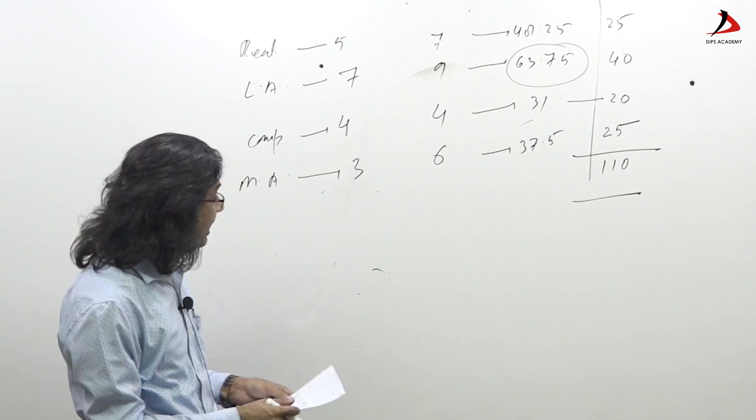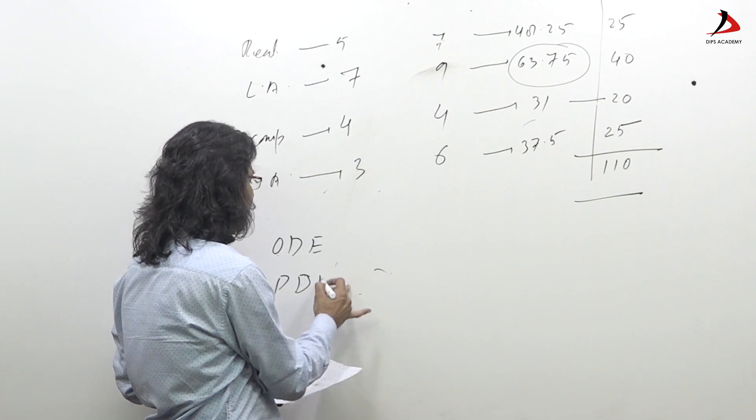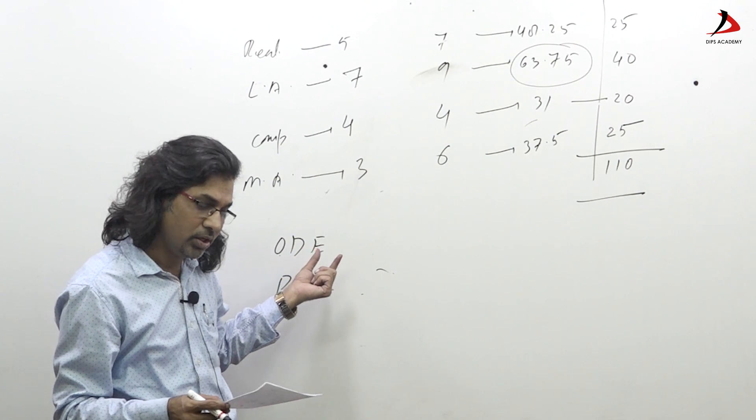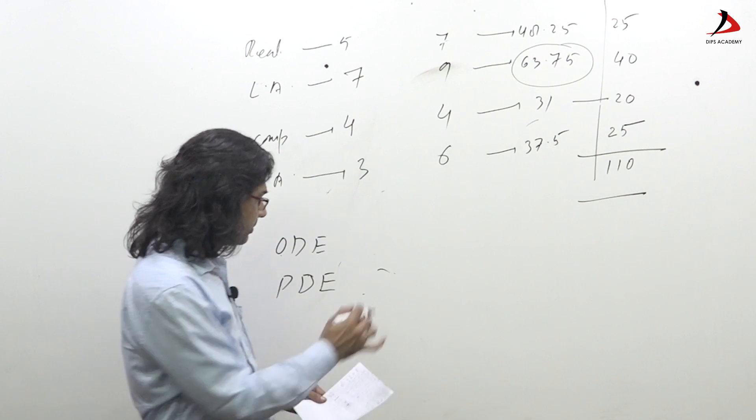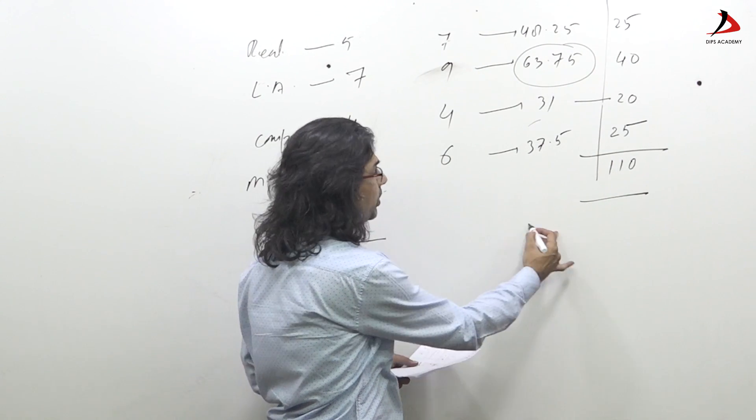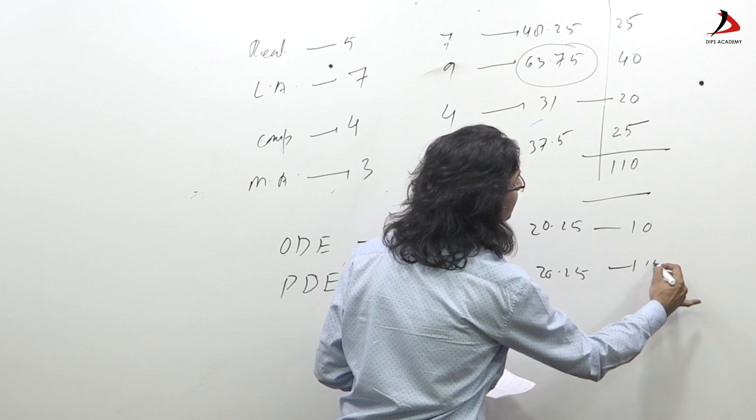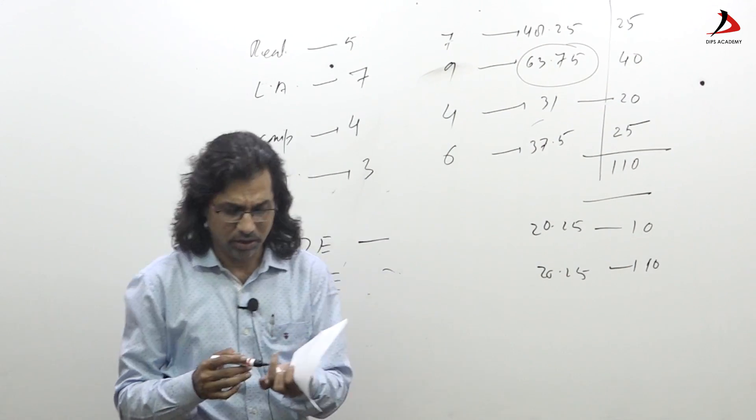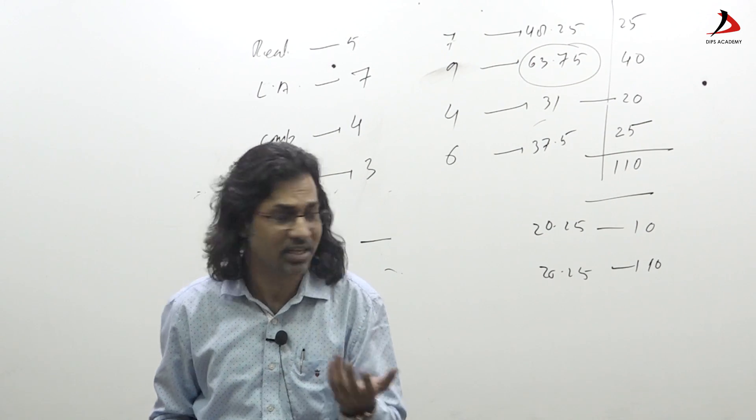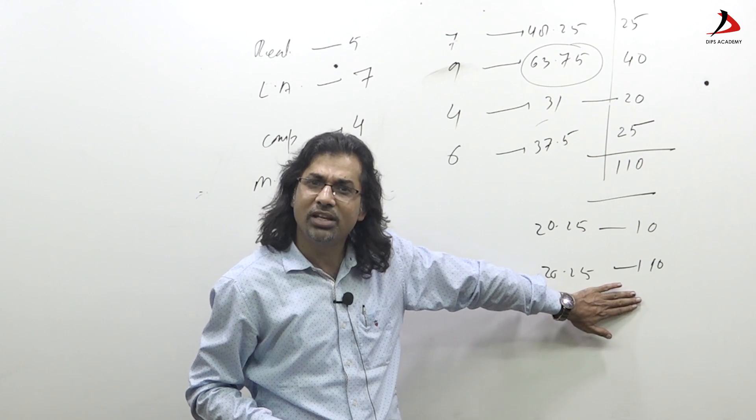Still, ODE PDE - partial differential equation and ordinary differential equation - they have contribution last exam 20.25 each. One question Part B and three questions Part C. So here you can see 20.25, 20.25 - just 10 marks, 10 marks.